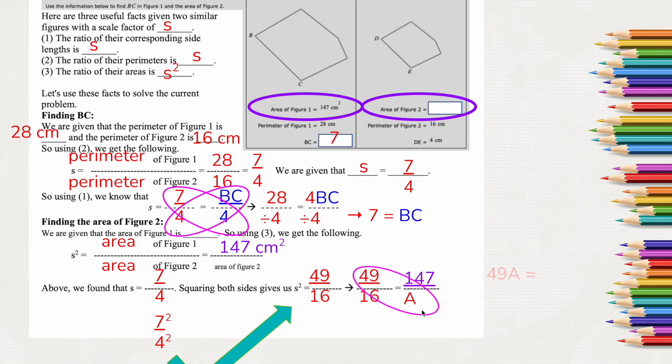So now I'm going to cross multiply. So I get 49A equals, and if I multiply 16 to 147, I get this nice big number, 2,352. And I'm going to divide both sides by 49 because 49 divided by 49 cancels out. I have A equals 2,352 divided by 49 is 48.